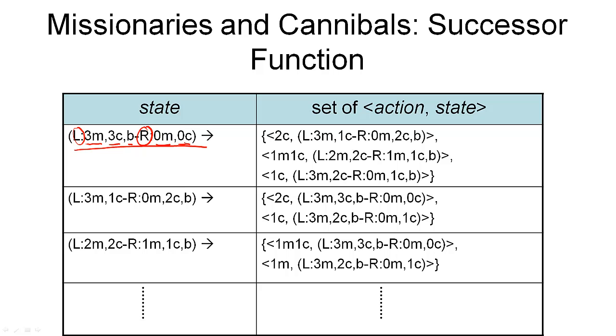This is mapped to three pairs: one, two, three. Each of which consists of an action and another state. So let's look at the first one. In the first case, we ship two cannibals across the river. And this gives us on the left-hand side, three missionaries, one cannibal, because we ship two cannibals across. On the right-hand side, zero missionaries and two cannibals plus the boat, which is also now on the right-hand side.